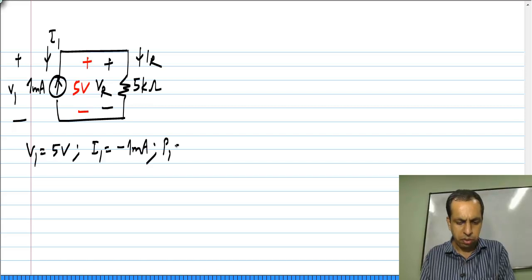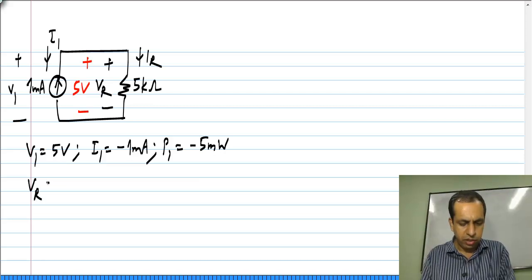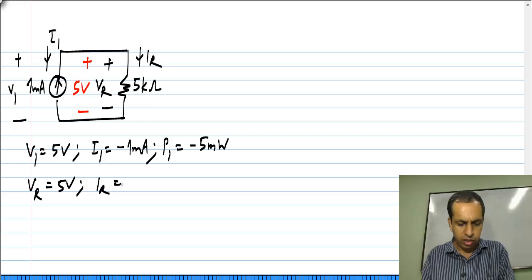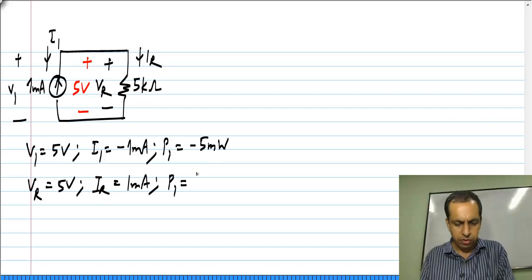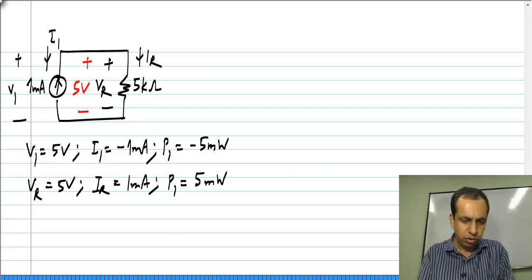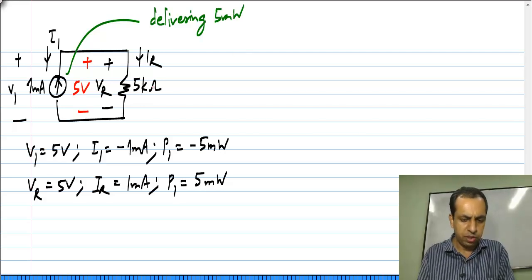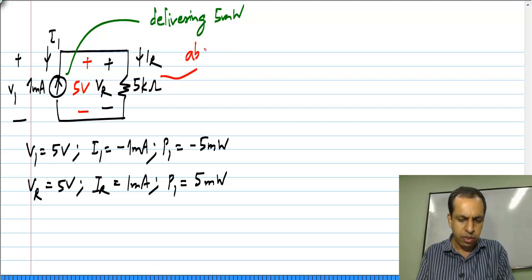The product P_1 = V_1 times I_1 is minus 5 milliwatts. For the resistor, V_R is 5 volts and I_R is 1 milliampere, so their product is 5 milliwatts. The current source is delivering 5 milliwatts (absorbing minus 5 milliwatts) and the resistor is absorbing 5 milliwatts.